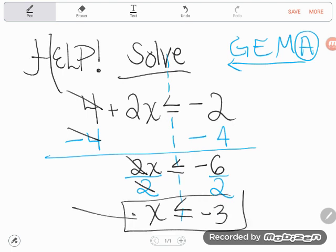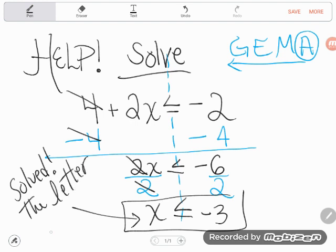I know I'm done because the letter's alone, and this one didn't say to graph your results or anything, so this is just done. X must be less than or equal to negative 3. So basically any number that's smaller than or equal to negative 3 could be negative 3, negative 4, negative 5, negative 6, negative 7, shoot, negative 7.23 would make this original inequality true.